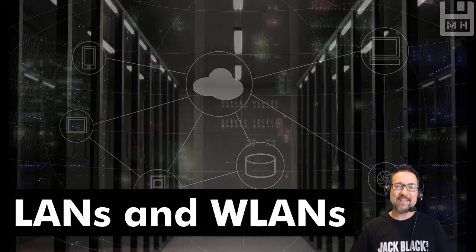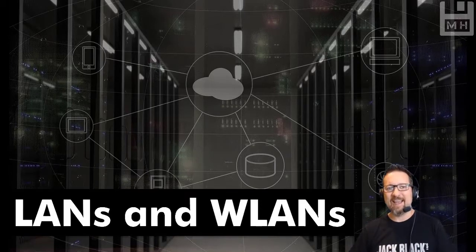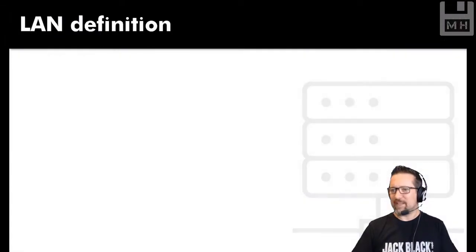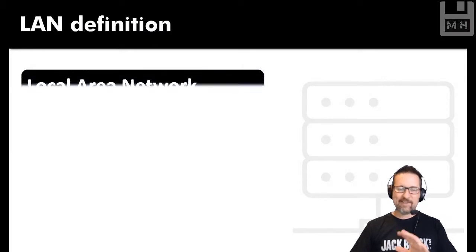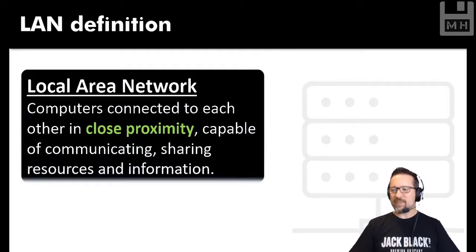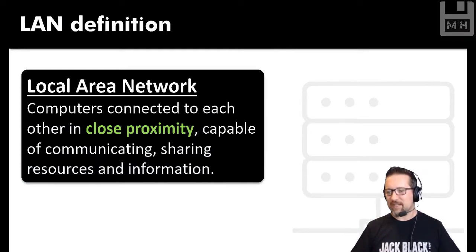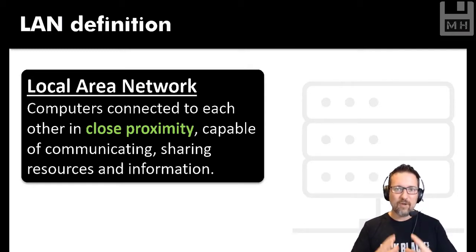A LAN is a local area network and a WLAN is a wireless local area network. If you're going to write this down in the test: a local area network is computers connected to each other in close proximity, capable of communicating, sharing resources and information.